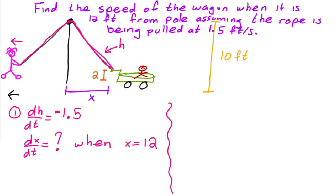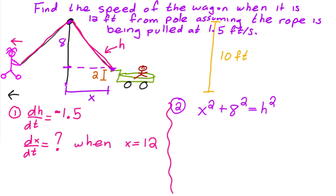Step two: find a formula that relates all of our information. It seems obvious that the Pythagorean theorem is the best bet. The Pythagorean theorem says x squared plus — now here it's not 10 squared, because 10 is the entire height of the pole and the wagon is being grabbed from lower down — so it's going to be 8 squared, and that equals h squared.